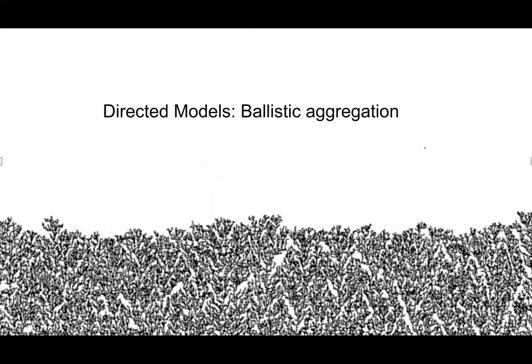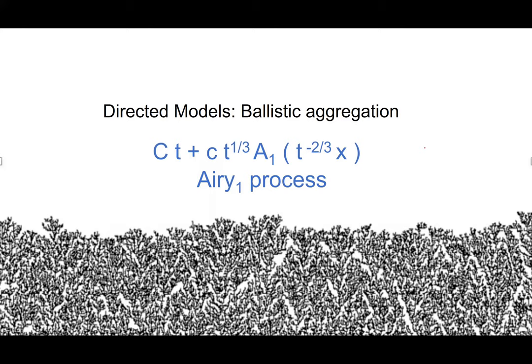One simplification we can make is to look at directed models. The simplest directed model is the model of ballistic aggregation. The growth is off a one-dimensional substrate — the one-dimensional lattice Z. At every site there's a tower of particles, and particles are falling from the sky as a rate-one Poisson process at every site independently, so the particles pile up.